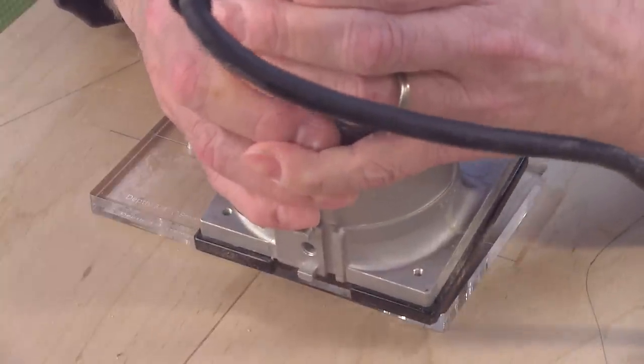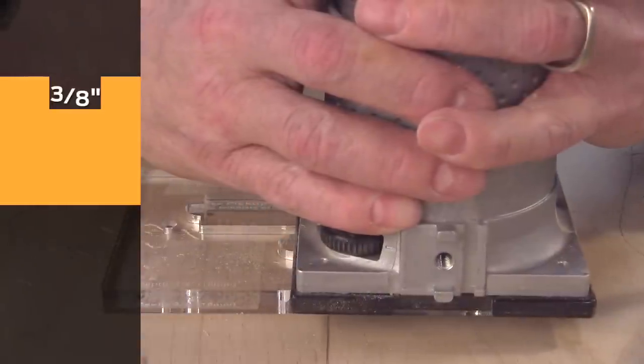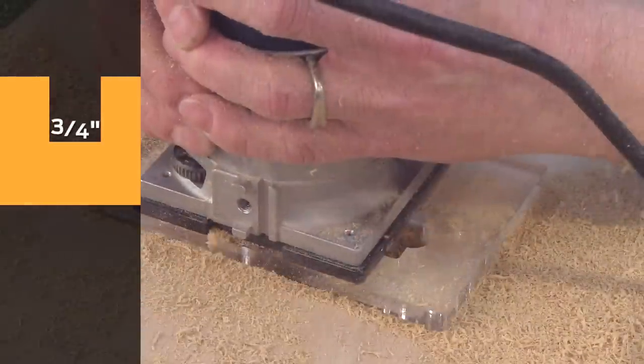Route your cavity in two passes, three-eighths of an inch deep each, for a total depth of three-quarters of an inch.